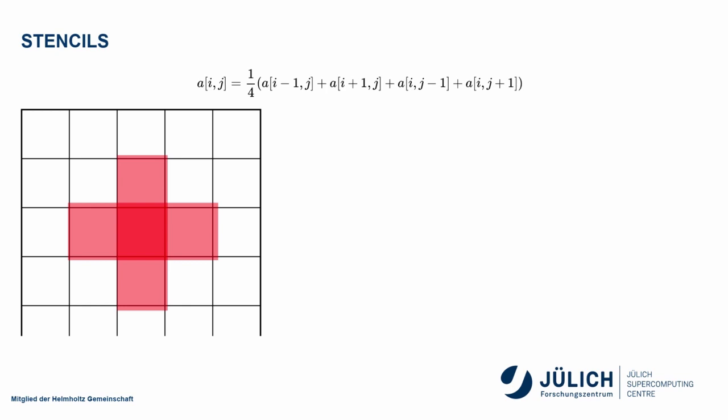We calculate the new value of the central cell by adding up the values of the surrounding cells and dividing by four, so we're taking the average. If you have a copy of the array, you can apply the entire stencil in parallel for each element.